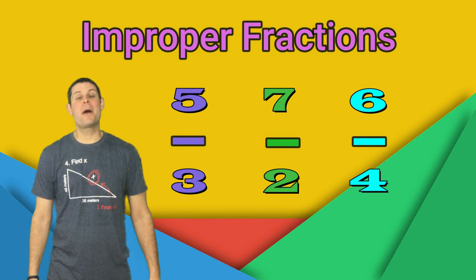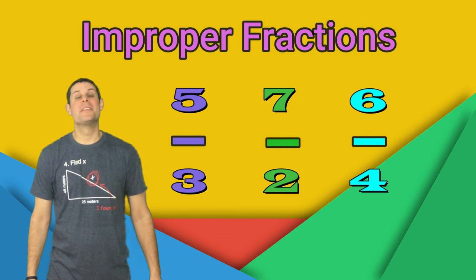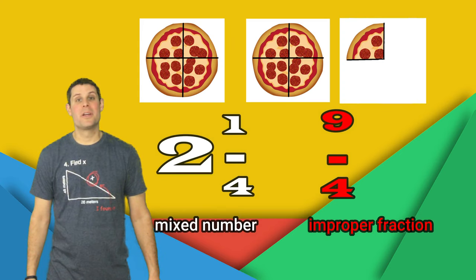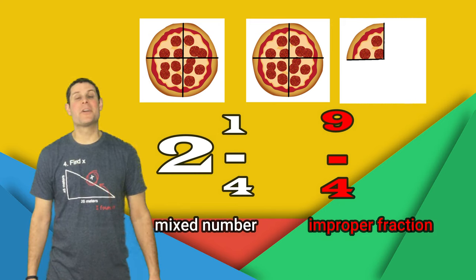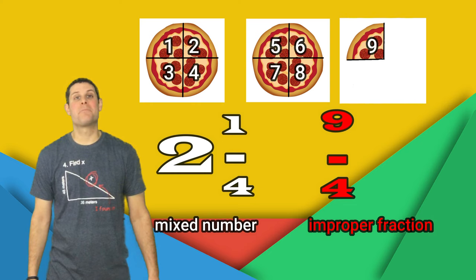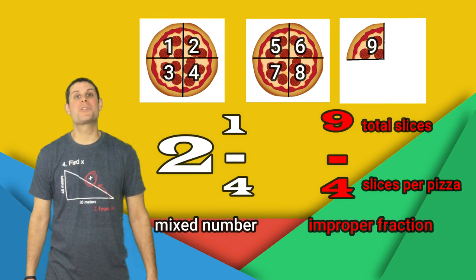However, there is another way. We could say it as an improper fraction. An improper fraction is when the numerator is greater than the denominator. So we could say two and one fourth as a mixed number, but we could also say nine over four as an improper fraction. We say that because there are nine total slices of pizza left and each pizza was cut into four slices.